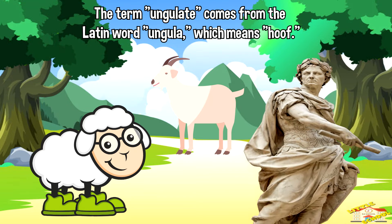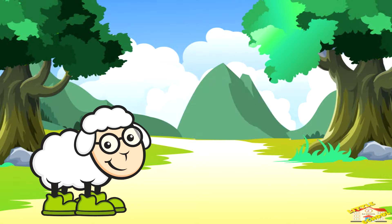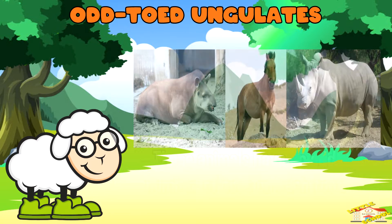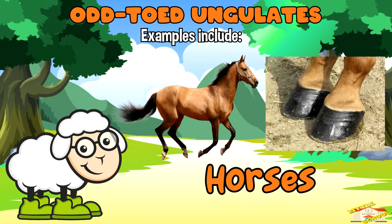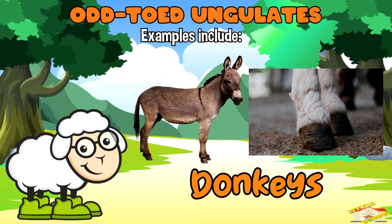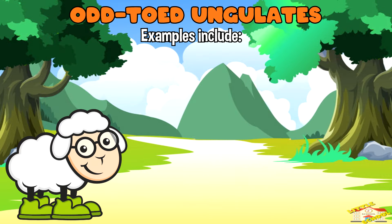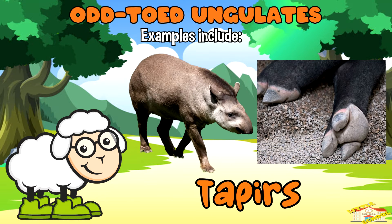The term ungulate comes from the Latin word 'ungula,' which means hoof. There are two main groups of ungulates. Odd-toed ungulates: these animals have an odd number of toes on each foot. Examples include horses, zebras, donkeys, rhinoceros, and tapirs.